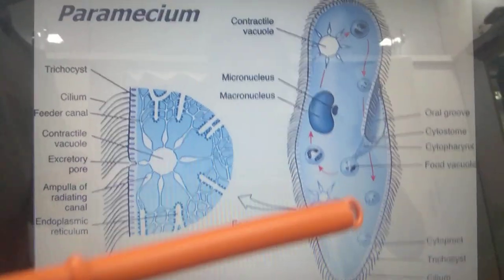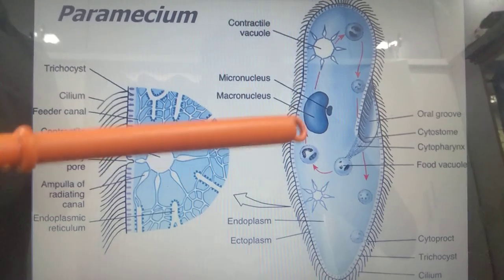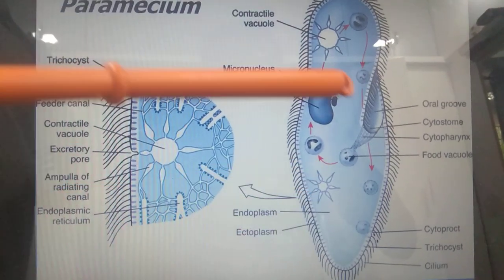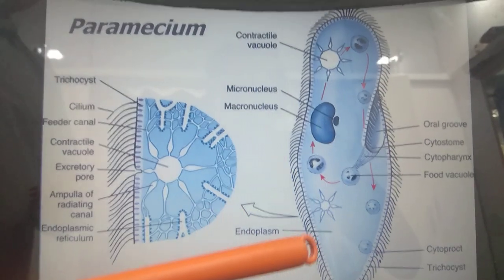This is paramecium. It belongs to phylum protozoa. The paramecium is a slipper-like animal, with a structure resembling a slipper.